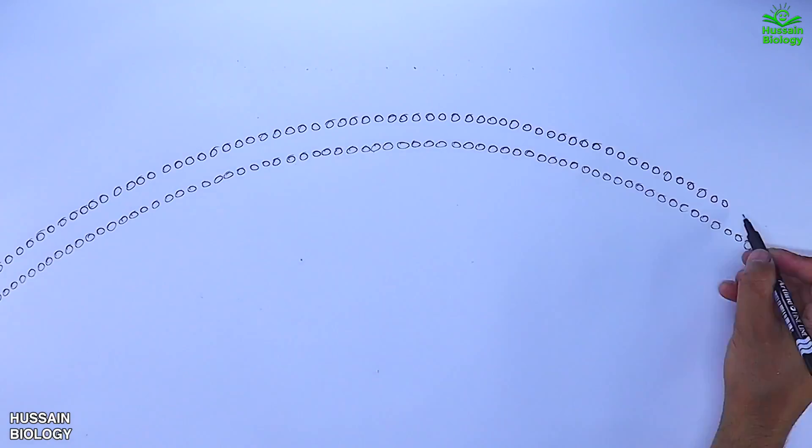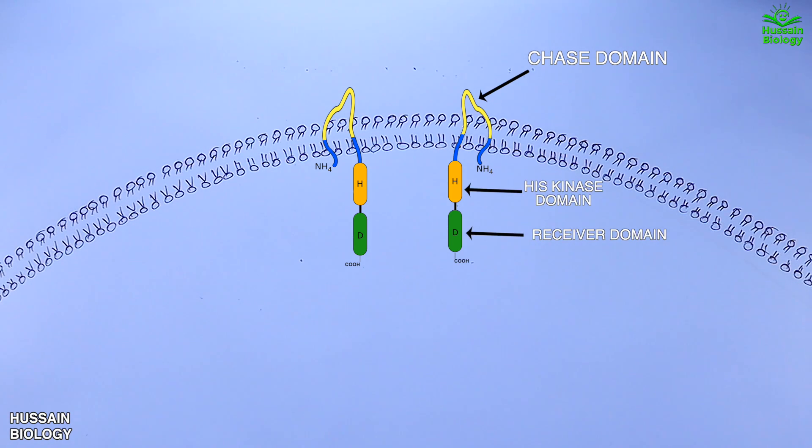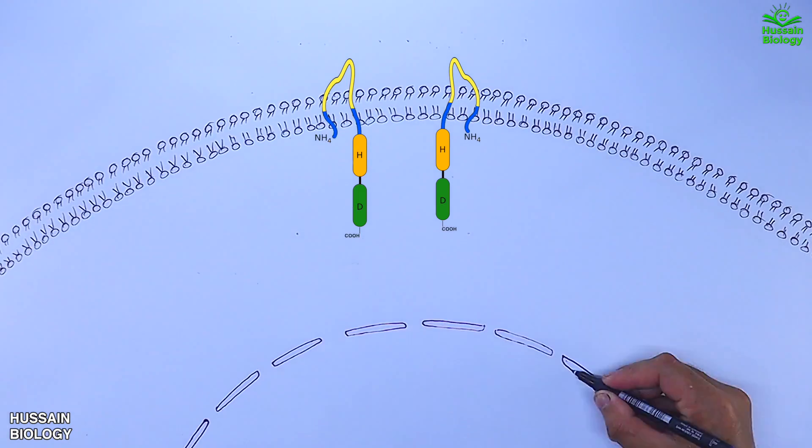Here in this diagram we have the cell membrane and on this we have two monomers of CRE1 or AHK2 receptor. We can see the extracellular domain of the receptor is the chase domain, and we also have the his kinase domain and receiver domain on the intercellular side of the receptor.